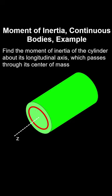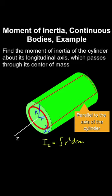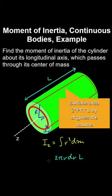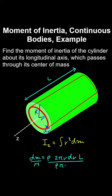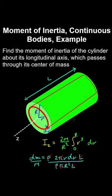Let's find the moment of inertia of a cylinder about its axis through the centre of mass, with radius R. We break the cylinder into infinitely thin shells of volume 2πr dr times the cylinder length. Multiplying by density gives dm; dividing by the cylinder's mass (density times volume) and making cancellations, we integrate from 0 to R. Taking constants outside the integral and evaluating gives the moment of inertia equal to mR²/2.